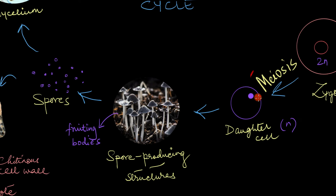So this diploid zygote will now undergo meiosis and give haploid daughter cells. These haploid daughter cells then become the spores or they develop into spores inside spore producing structures like these fruiting bodies of mushrooms. And these spores are sexual spores because they are produced through the sexual cycle.